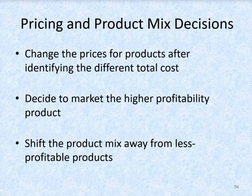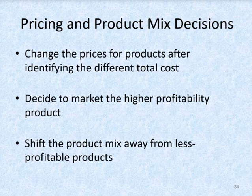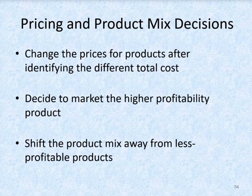ABC can be used to make better decisions, including pricing and product mix decisions — meaning how much of each product to produce. ABC recognizes that not all indirect costs are driven by the number of units produced; many costs are incurred at the batch level or product level, where they can be spread over the number of units in a batch or product line. ABC tends to increase the unit cost of low-volume products and decrease the unit cost of high-volume products. As a result, many companies have found they were losing money on some products while earning much more profit than realized on others. By shifting the product mix away from less profitable toward more profitable products, companies can generate higher operating income.